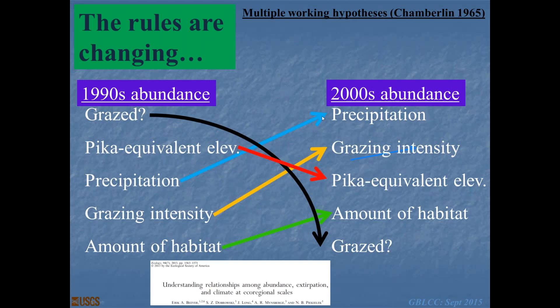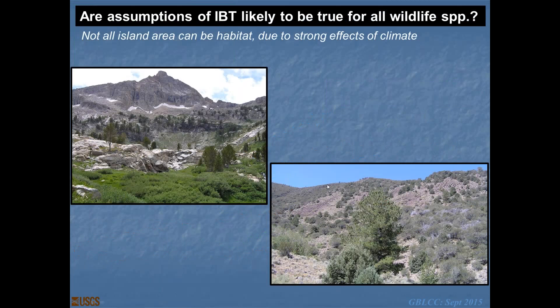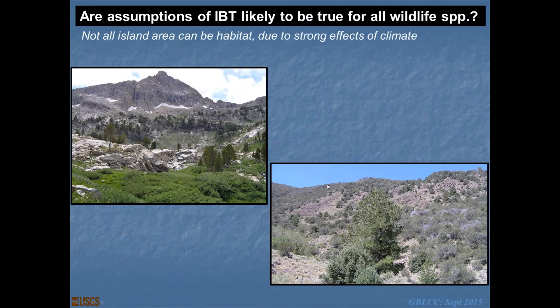The amount of habitat surveyed in the field was a very low predictor of where pikas were lost from — a real game changer. If we can't use habitat-wildlife relationships to tell us what species are going to be lost from, we have another filter. Not all island area can be habitat due to strong effects of climate. Given that Nevada is the driest state and the Great Basin is a very strongly water-limited ecoregion, we've put out sensors to ask: does relative humidity — or derivatives like vapor pressure deficit or dew point — better predict pika persistence than temperature? In early first-year data, places where pikas remained were about 23% absolute difference higher in relative humidity than extirpated sites.